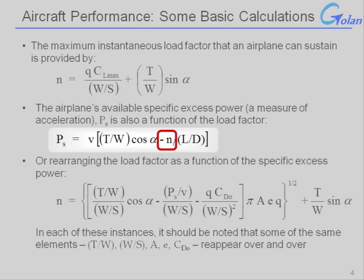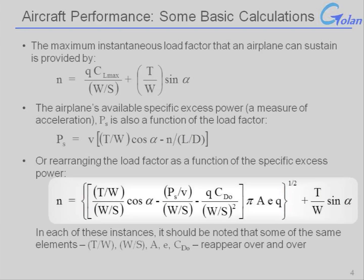We can also see that the specific excess power is related to the thrust-to-weight ratio, as we should surmise for pretty much any measure of acceleration. And it does have a relationship to the lift-to-drag ratio, which again contains the whole of the drag polar embedded into that particular number. If we rearrange specific excess power such that we are looking at the concurrent load factor associated with it, we get a relationship that looks like this.